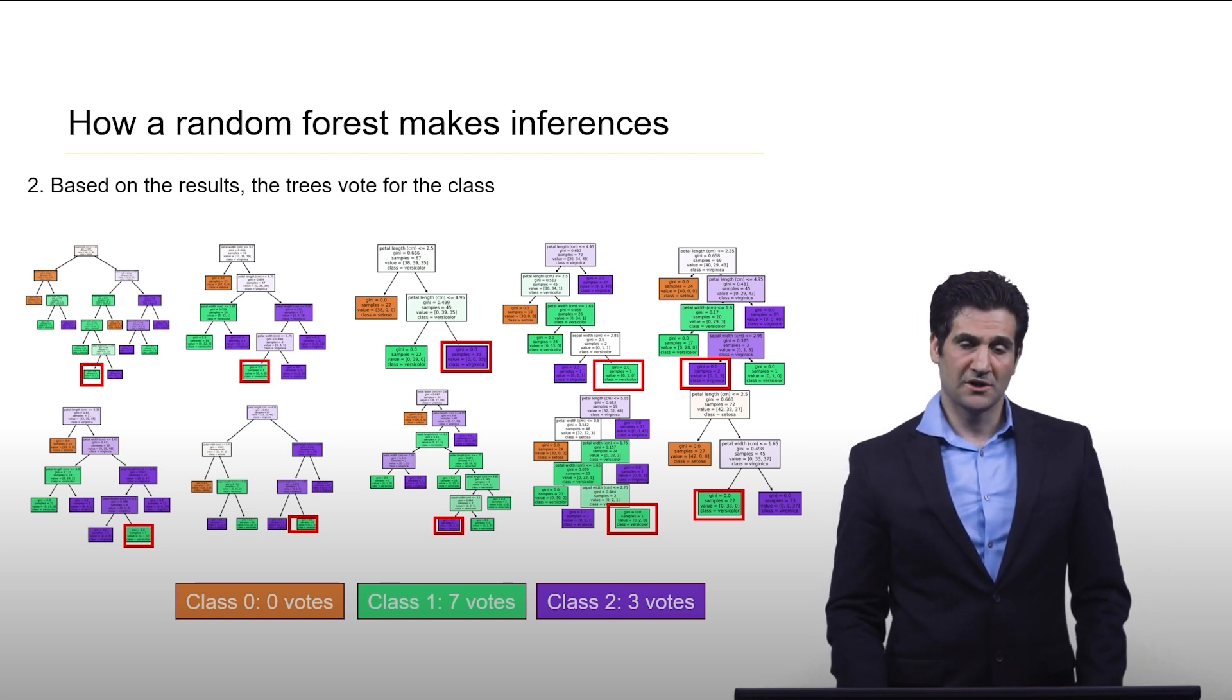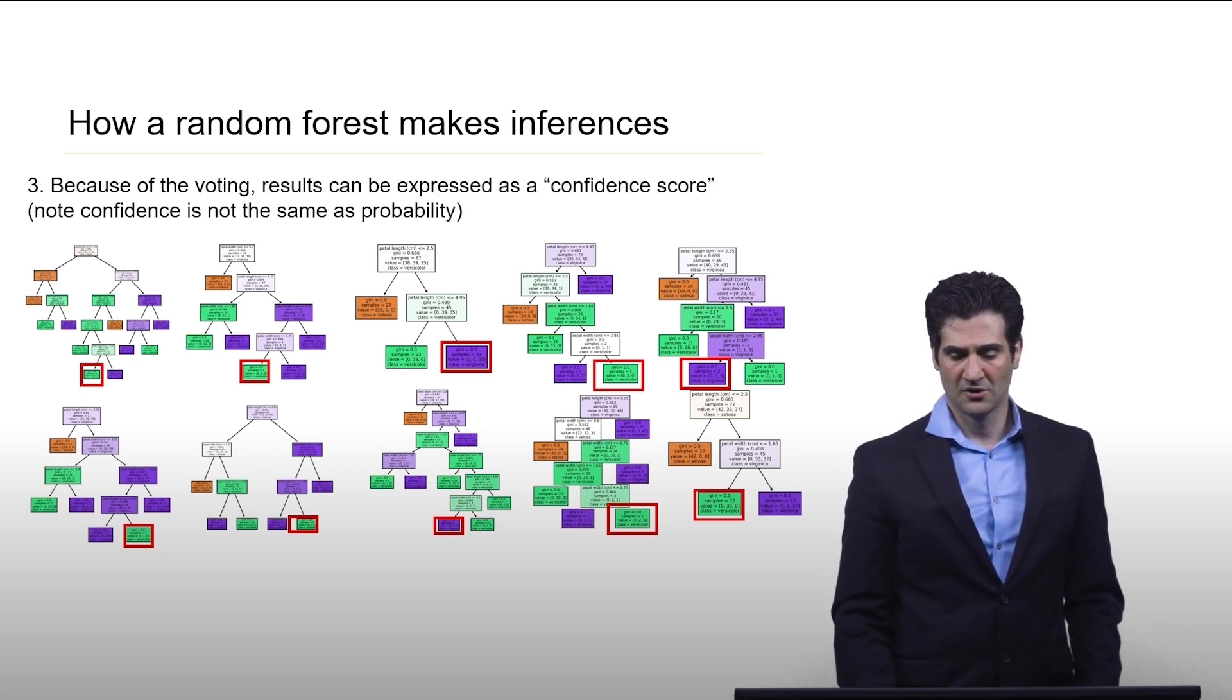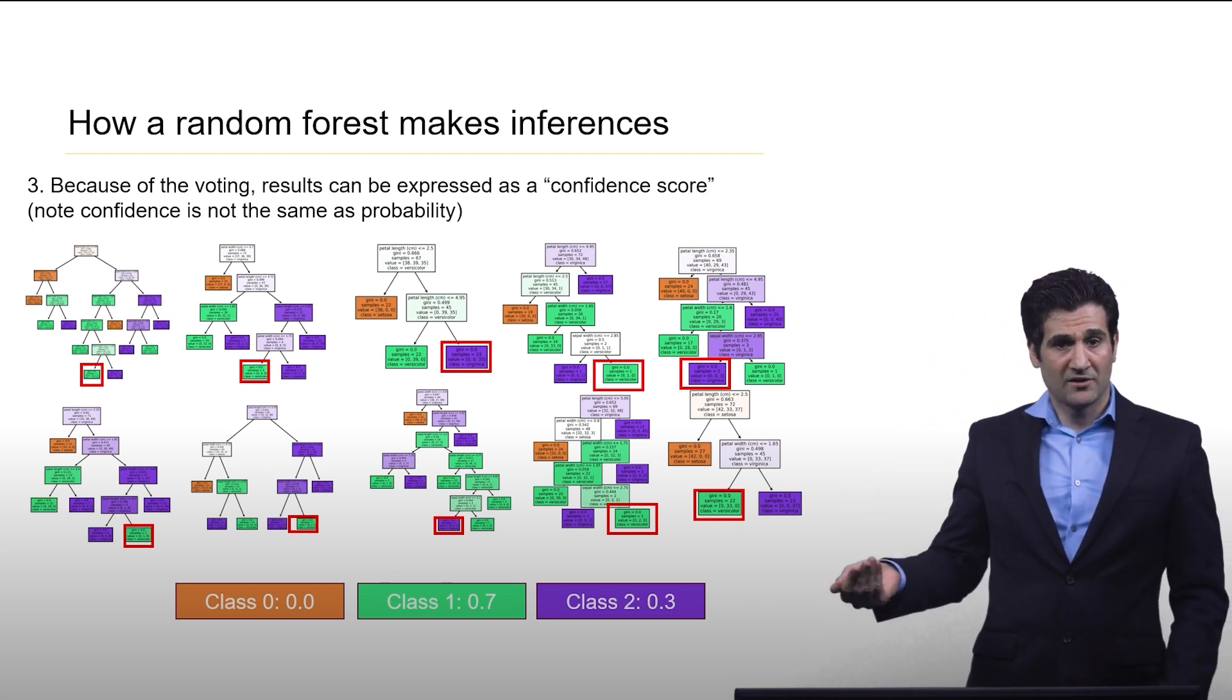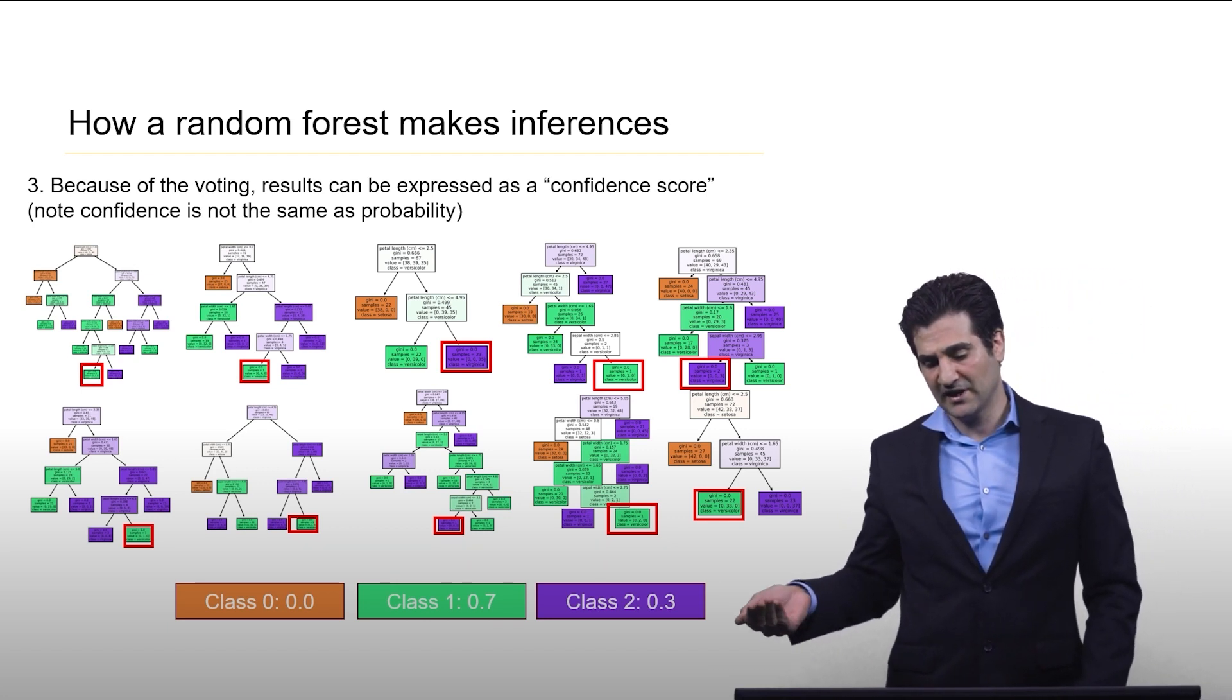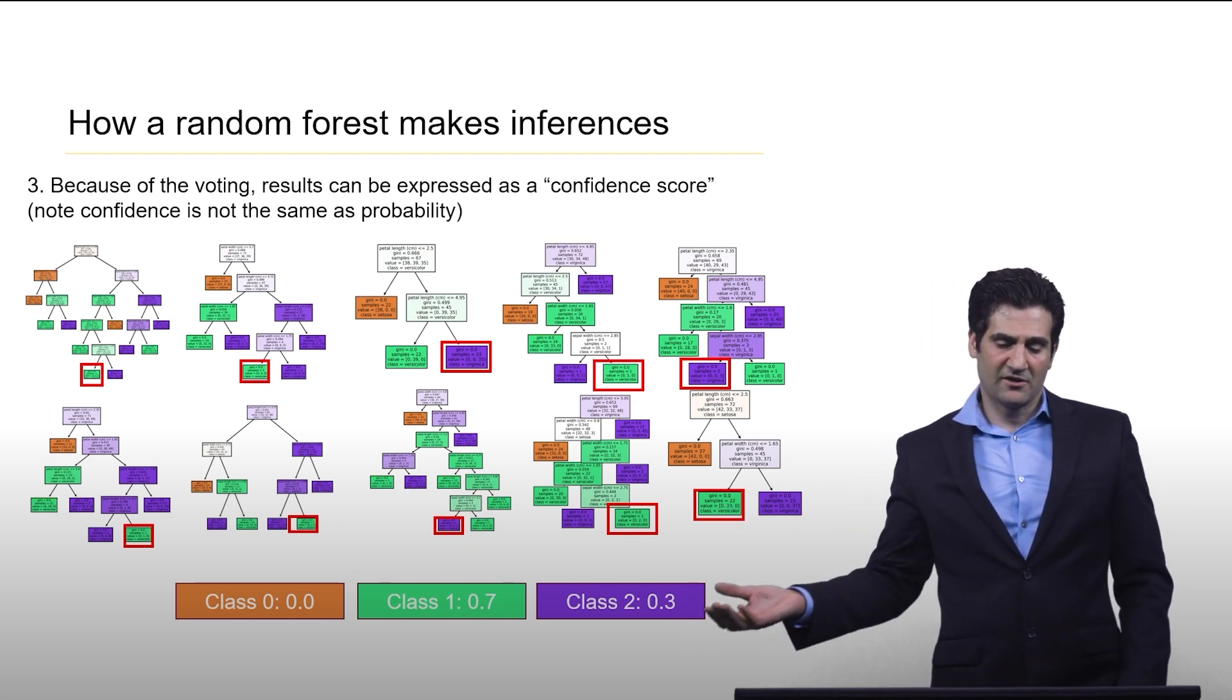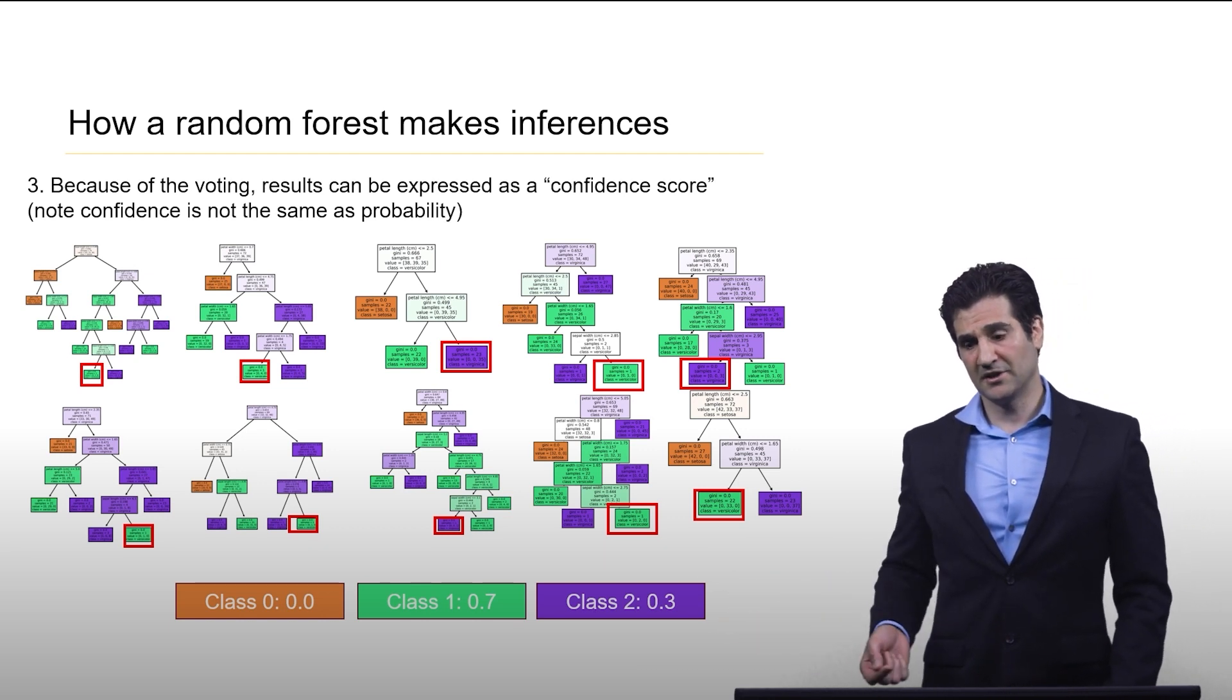What you can do is you can interpret votes as what's called a confidence score and this is very easy to do. In this case we will just normalize the score. So now we have a level of confidence. This is like saying that it's very likely that it thinks it's class one, but there's a little bit of a chance it could be in class two.